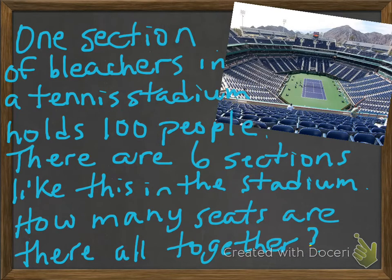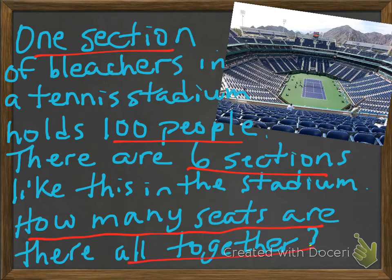Here's our problem: we have one section of bleachers in a tennis stadium and it holds 100 people. There are six sections like this in the stadium. How many seats are there altogether? So we have one section by itself that holds 100 people, and if there are six sections like this, then how many people can there be altogether?